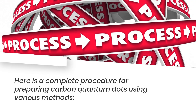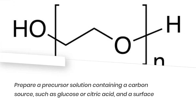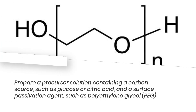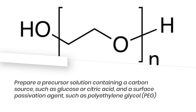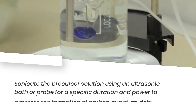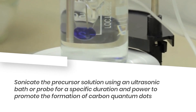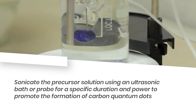Here is a complete procedure for preparing carbon quantum dots using various methods. Prepare a precursor solution containing a carbon source, such as glucose or citric acid, and a surface passivation agent, such as polyethylene glycol (PEG). Sonicate the precursor solution using an ultrasonic bath or probe for a specific duration and power to promote the formation of carbon quantum dots.